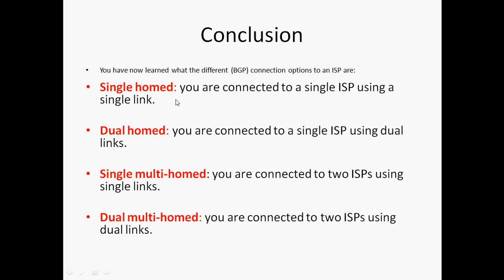To summarize the different BGP connection options to the ISP: single home means single ISP with a single link; dual home means single ISP with dual cable; single multi-home means connected to two ISPs using a single cable; dual multi-home means connected to two different ISPs with redundant links. You should be familiar with these terms because in a working environment, if a customer says they are using dual multi-home design, you know they are using two different ISPs with redundant links.